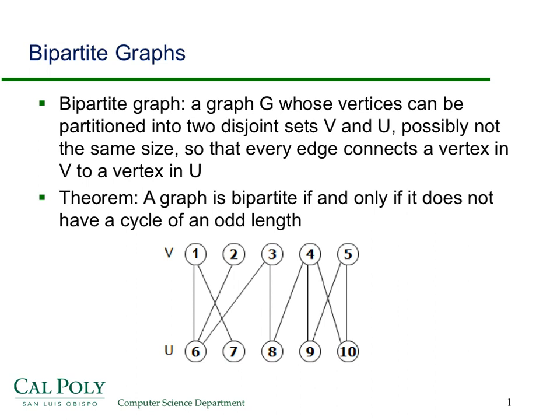Remember what a bipartite graph is. It's a graph whose vertices can be partitioned into two disjoint sets so that every edge connects a vertex in one of the sets to a vertex in the other set. So here I've got the two sets are V and U, and the only edges go from U to V or V to U. There are no edges where both vertices are in U or both vertices are in V.